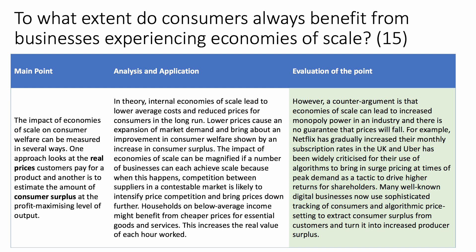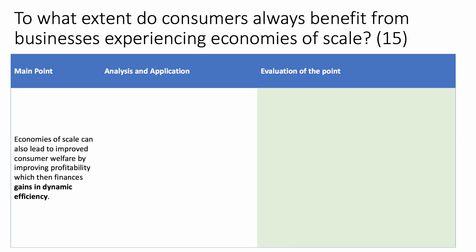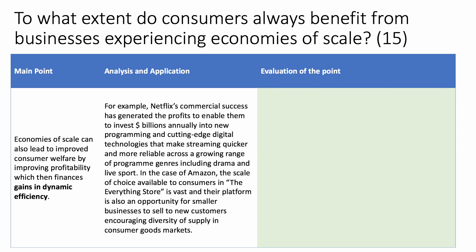Let's try another example along the same lines. Economies of scale can also lead to improved welfare by improving profitability, which then finances gains in dynamic efficiencies. For example, Netflix's recent commercial success has generated the profits to enable them to invest many billions of dollars each year into new programming and cutting-edge digital technologies that make the experience for consumers better.